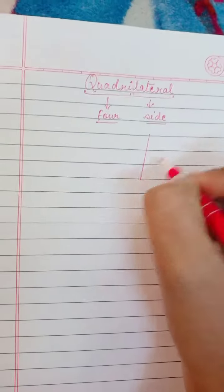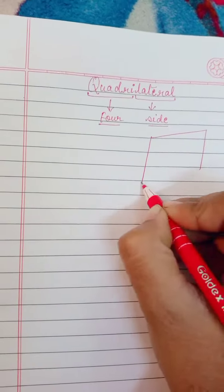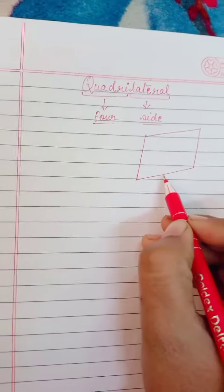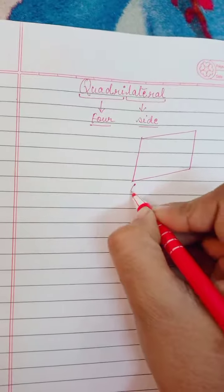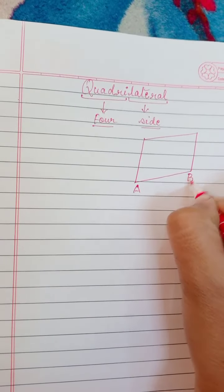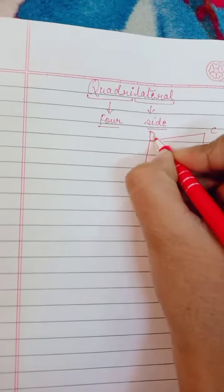See here, A, B, here, this is a plane figure bounded by four line segments. We can name this quadrilateral as A, B, C, D.